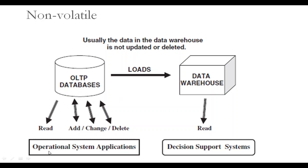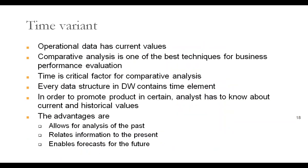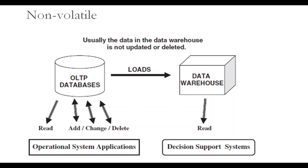So this is what we have seen. In OLTP databases, data can be read, added, updated, or deleted. But once we load the data at a specific interval from OLTP databases into the data warehouse, we can only read the data — we cannot delete the data. So these are the four properties of a data warehouse: first is subject-oriented, second is integrated data, third is time-variant, and fourth is non-volatile data. That is it regarding the properties of a data warehouse. Thank you, students.